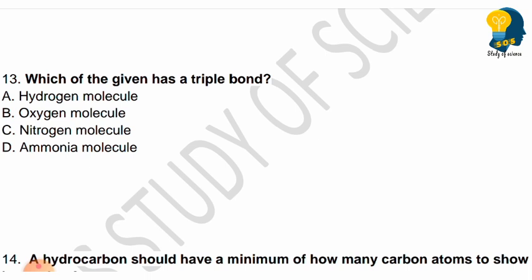Next question: Which element forms a triple bond in its molecule? Options are hydrogen molecule, oxygen molecule, nitrogen molecule, or ammonia molecule. Between which molecules does triple bond formation take place? Choose your right answer.